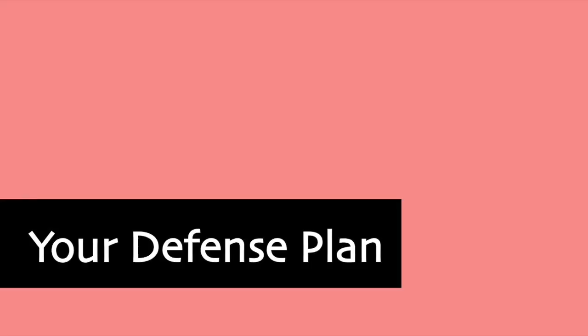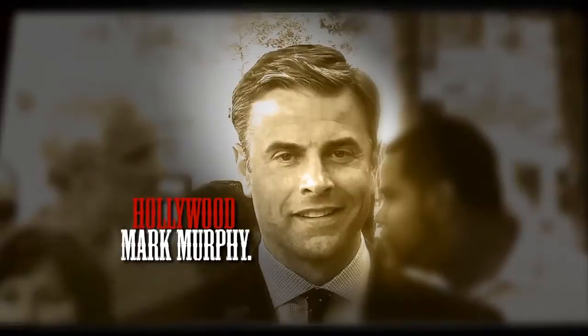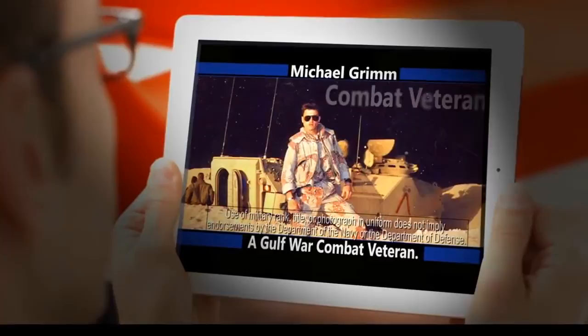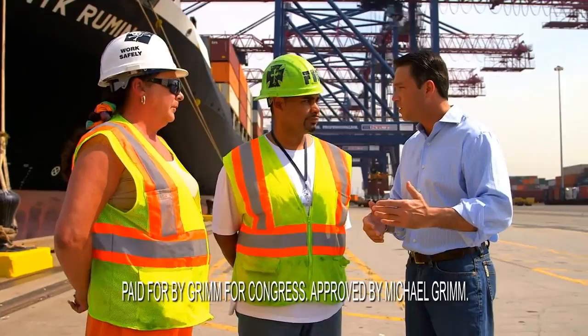Now, what would you do if you were attacked like this? Meet Hollywood Mark Murphy — he just moved back to Staten Island after living in California for 18 years. Some say he moved back to run for Congress. Others say he left because the failed actor didn't pay his taxes. Mark Murphy is so desperate he'll say anything, even shamelessly smearing Michael Grimm, a decorated combat veteran and former FBI agent. Hollywood Mark Murphy — a desperate candidate will do desperate things. I'm Michael Grimm and I approve this message.